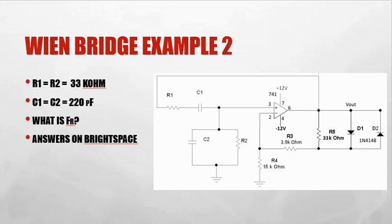Wien bridge example number two. R1 equals R2 is 33k ohm. C1 equals C2 is 220 picofarad. What is the frequency of resonance? The answers are on Brightspace.